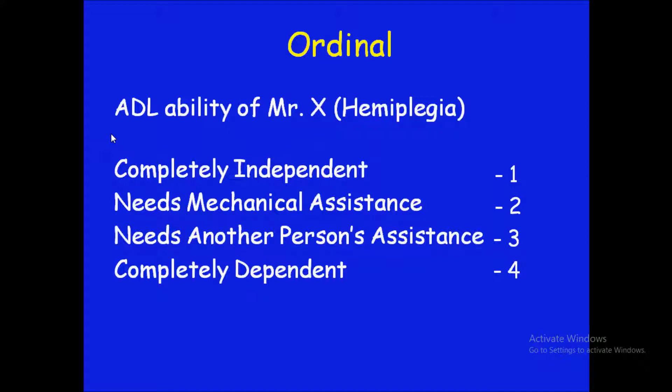The next property is that ordinal scale does not have equal intervals. The distance between number one and number two is not the same as between number two and three, or three and four. For example, I can't say that number four, completely dependent, is twice as bad as number two, needs mechanical assistance — even though four is numerically twice two. The distances between categories are totally different, so equal intervals do not exist in ordinal scale.